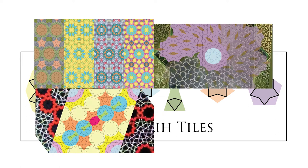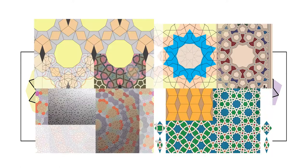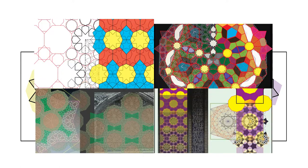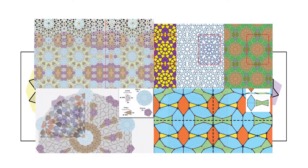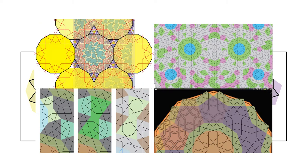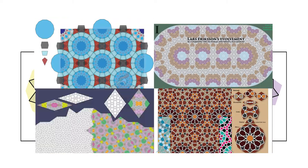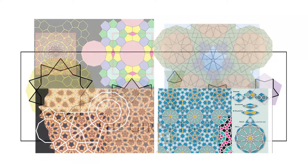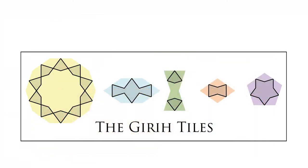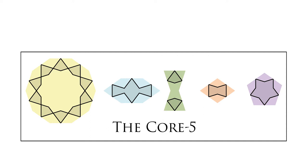Analysis of existing five-fold Islamic geometric patterns shows that these five tiles only enable tessellation of a small portion of the patterns. So the Giri Tiles tile set ought to include more tiles. Hereafter, I refer to the existing five tiles as the core five tiles.